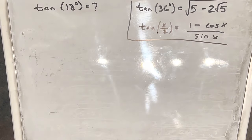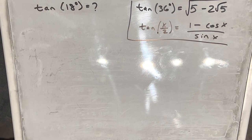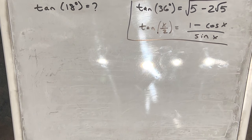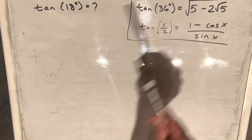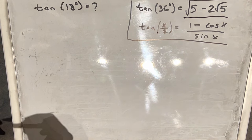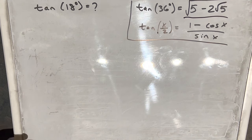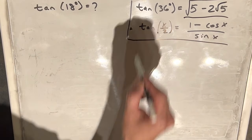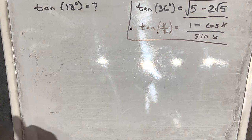We have this problem on the board: I want to find today the exact value for tan(18°). I have a few facts on the right. I'm going to use the fact we already know tan(36°) — I'll link to the video where that's derived — and I also did a similar video using the same technique to find tan(9°). Then we're going to use the half-angle formula for tangent.